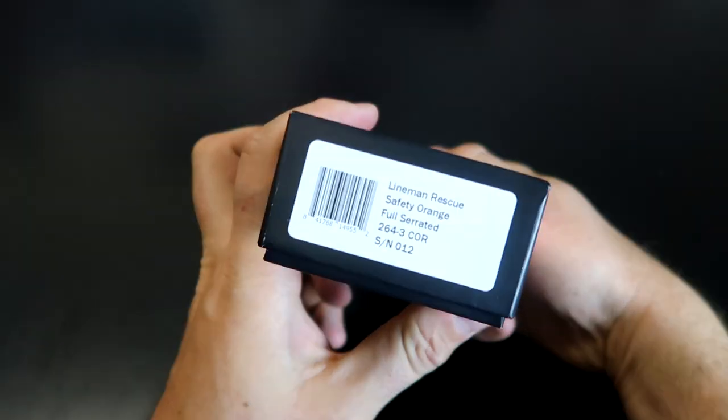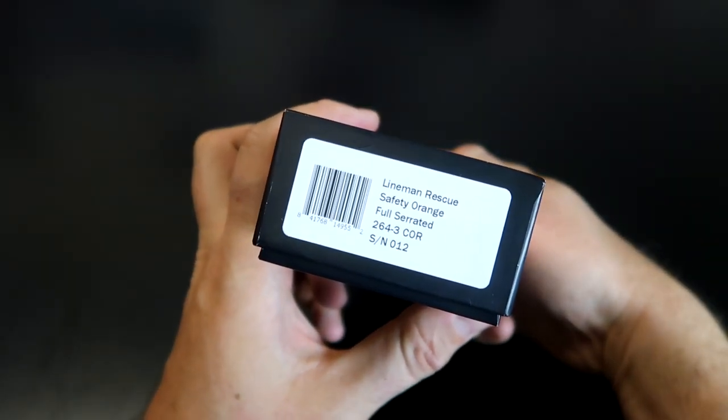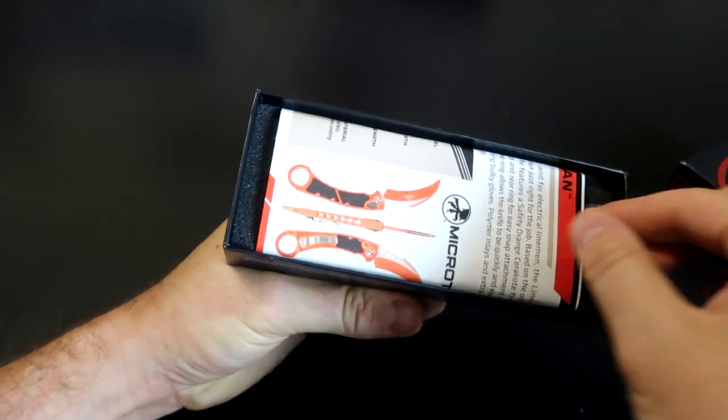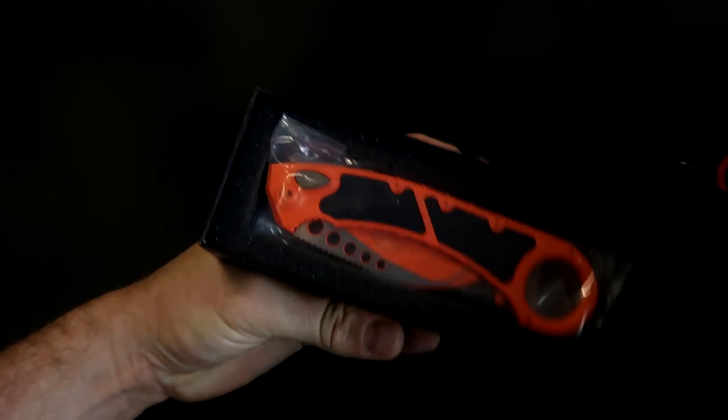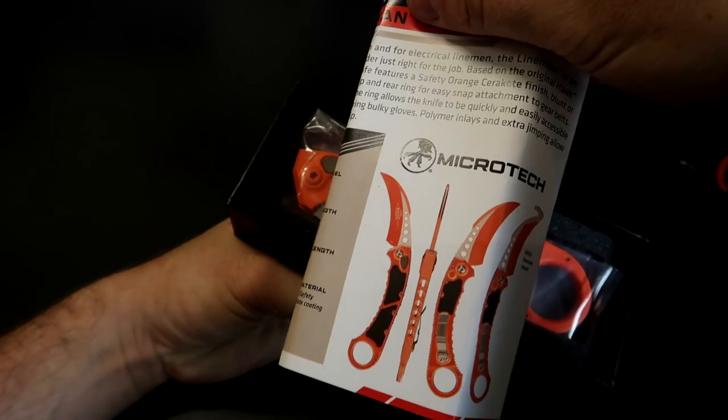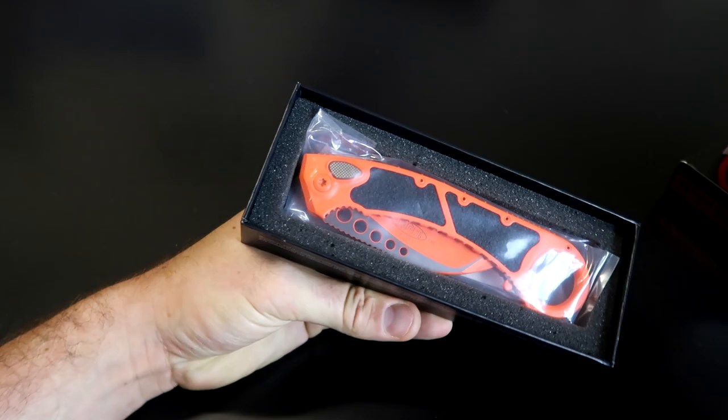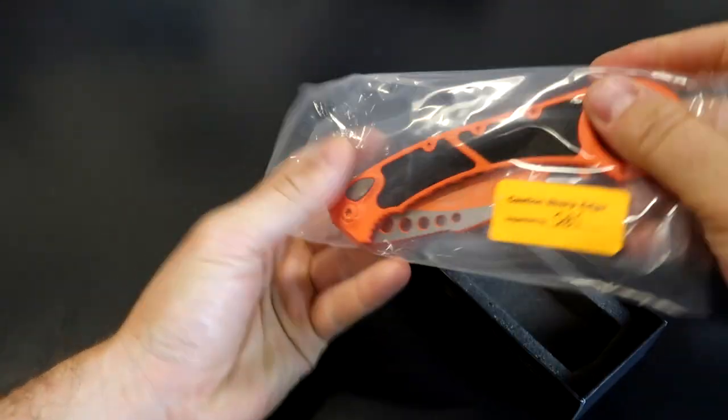Got right here another Microtech Lineman Rescue, safety orange, full serrated, number 12. Wow, not a lot of them were made. Check this out, it's orange and there's a couple of different types. This one is very unique.